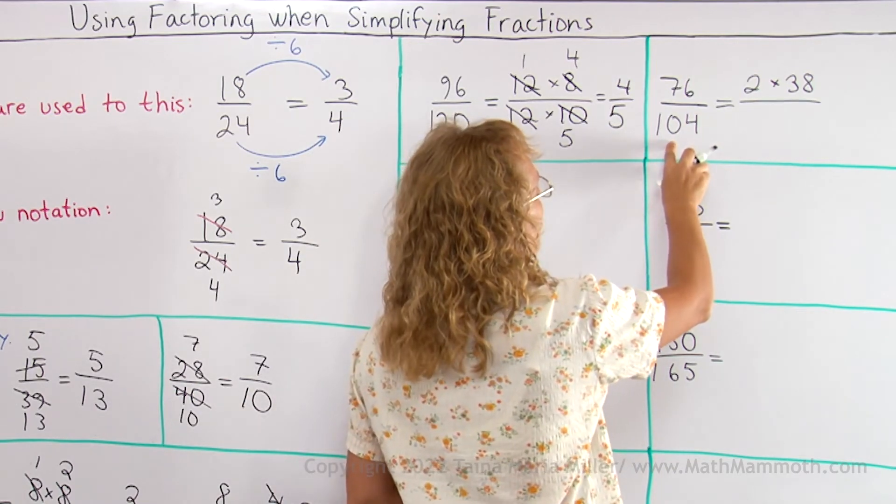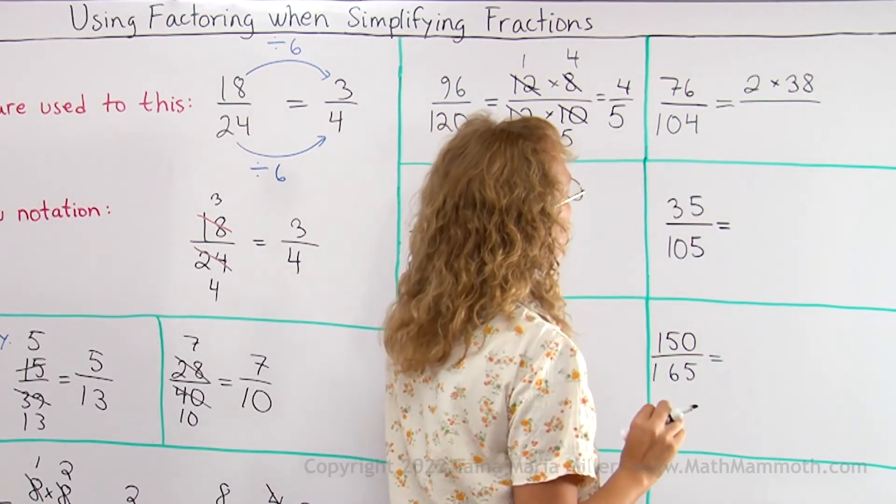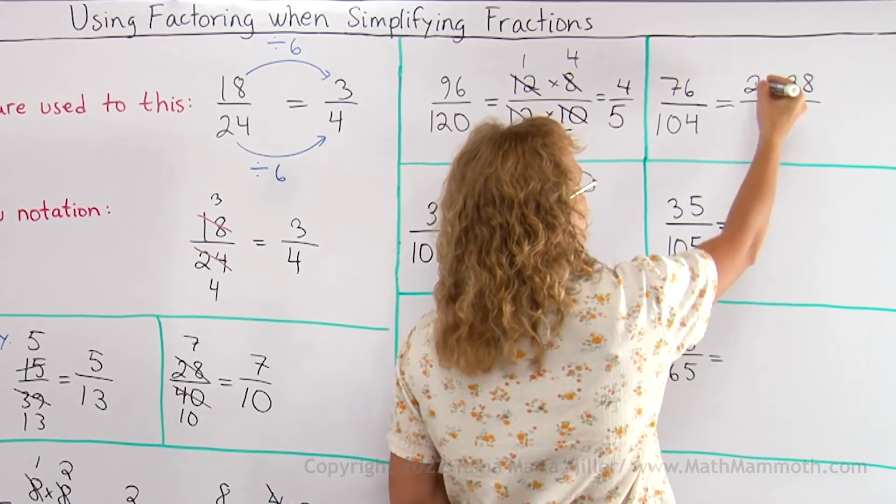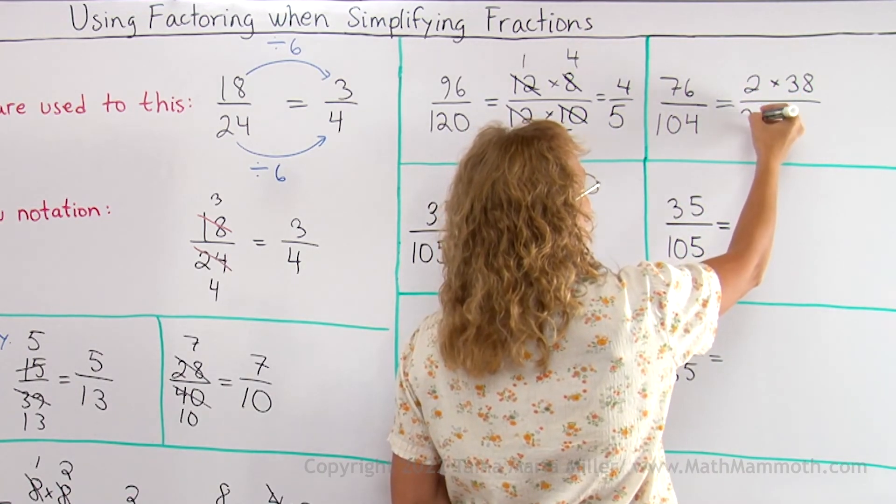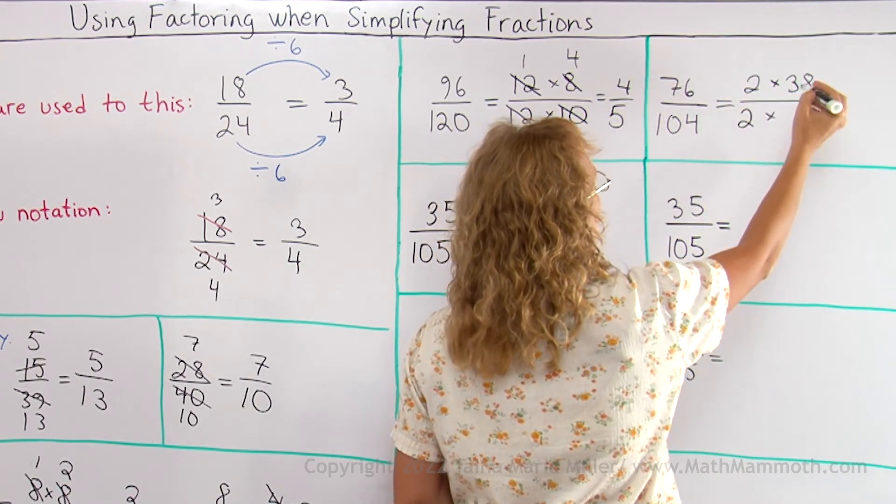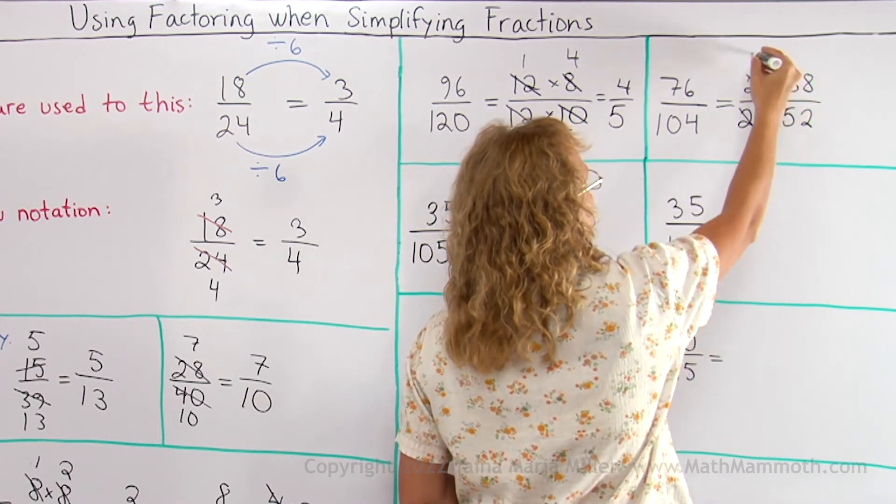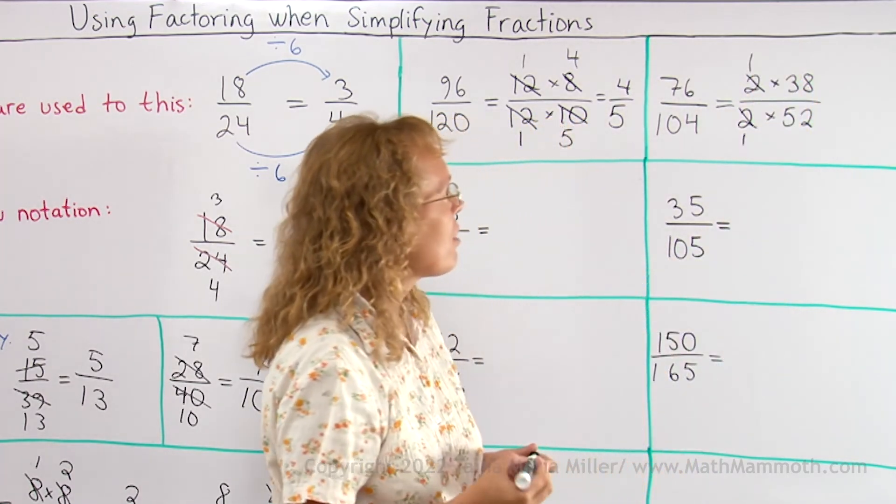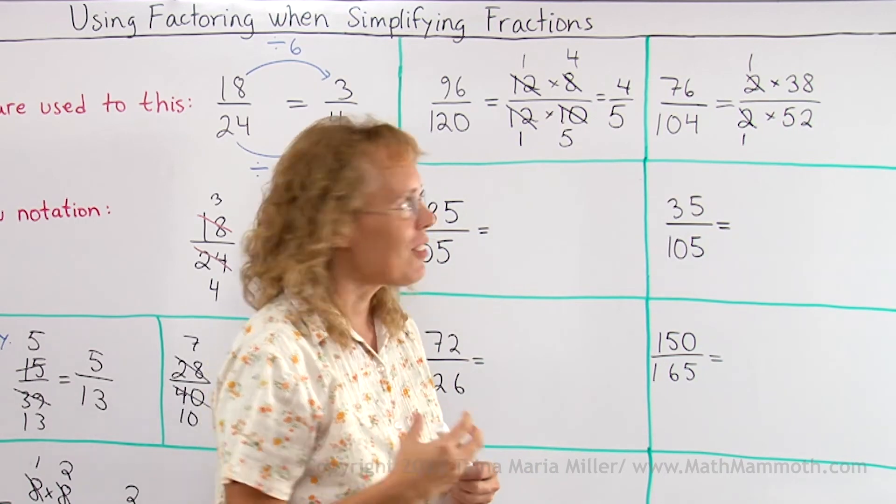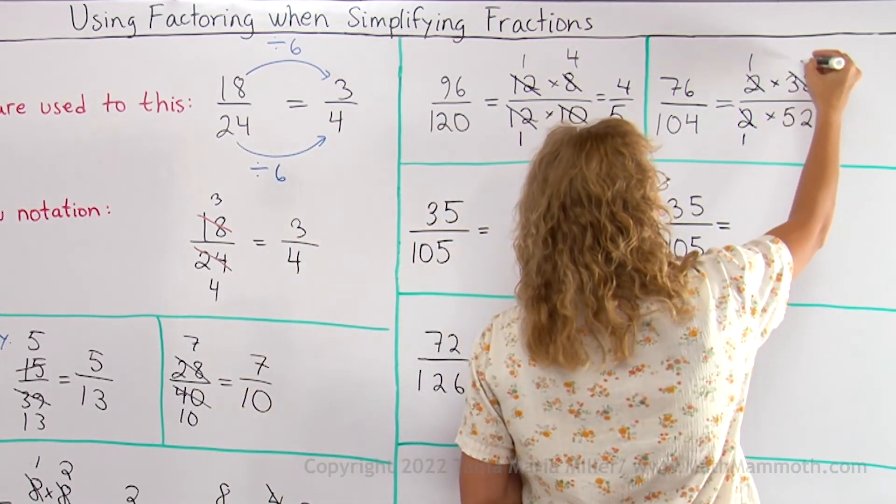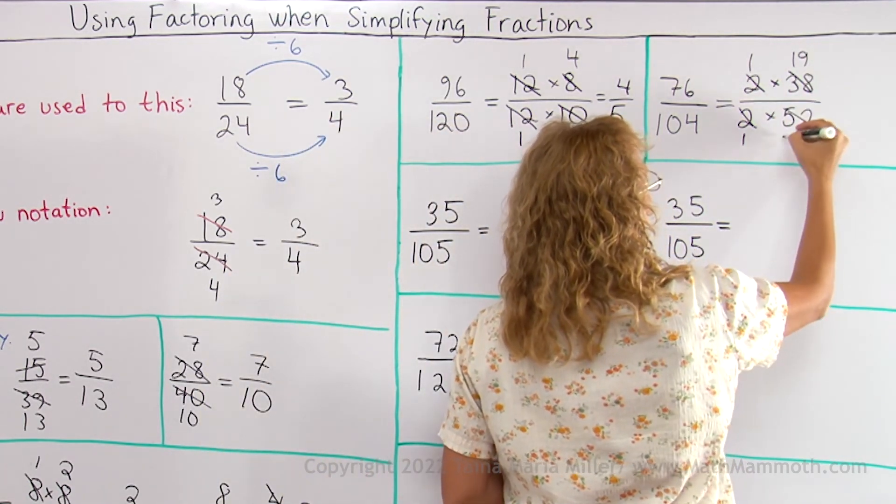Now this one is divisible by 4 and 2. But since we had 2 there, let's try that one here too. 2 times 52. Now my 2s cancel. But I still can simplify because 38 and 52 are still even numbers. So I divide by 2 and get 19. Divide by 2 and get 26.